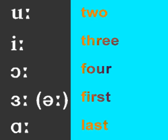As we have seen, the numbers 2, 3 and 4 all contain long vowels — the ones with the two dots after them. There are five long vowels altogether. The other two are found in the words first and last.